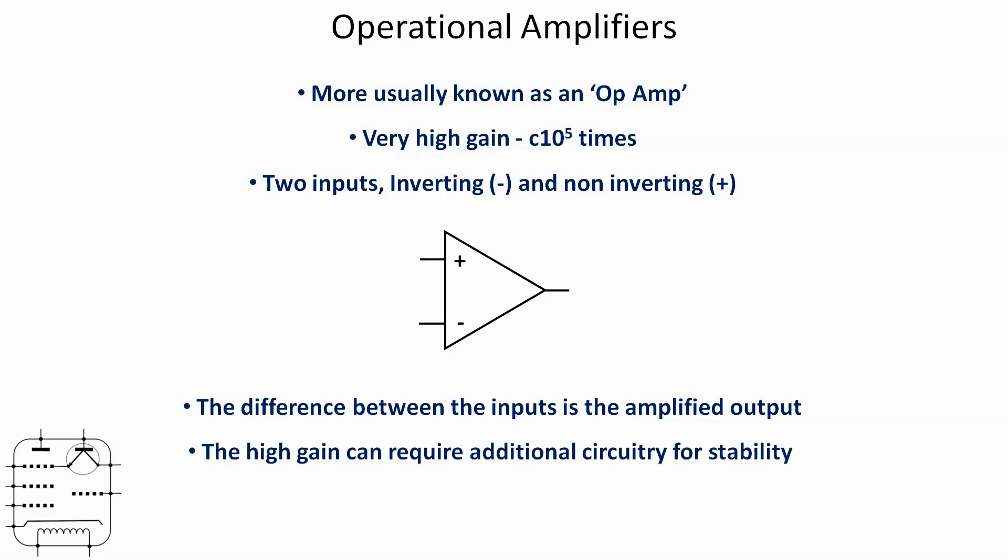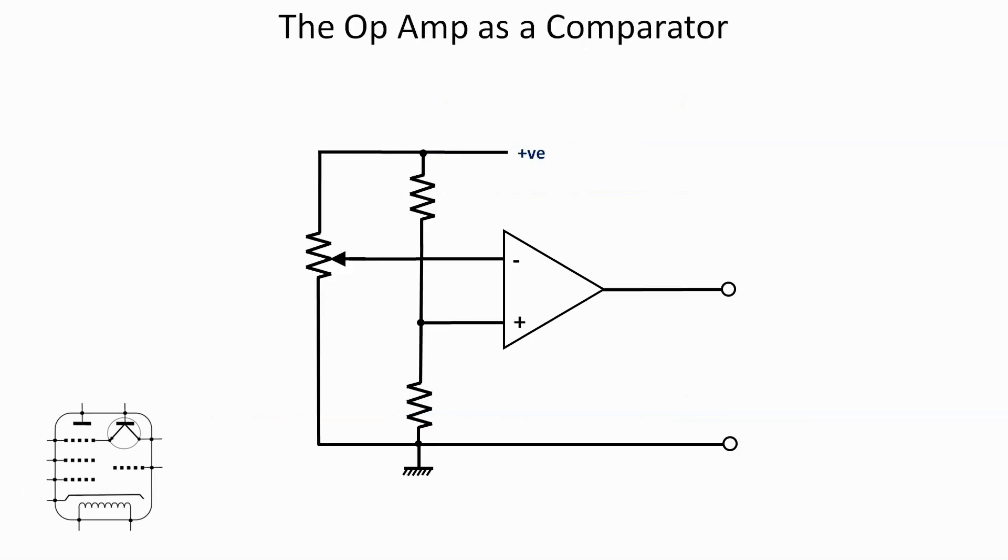The very high gain can require additional circuitry for stability, and certainly in the example I'm going to show you, I've actually included some additional circuitry for that. One of my textbooks refers to it as the high gain requires taming so that you can control the output.